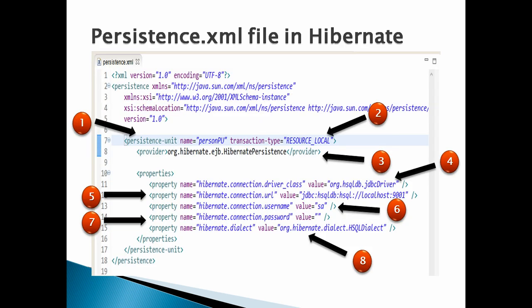The diagram depicts a preview for a simple persistence.xml file in JPA. It has a root tag by name 'persistence'. This tag has one or more persistence unit definitions. The persistence tag has a child tag by name 'persistence-unit'.